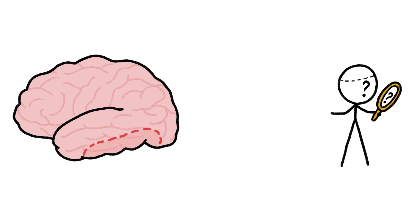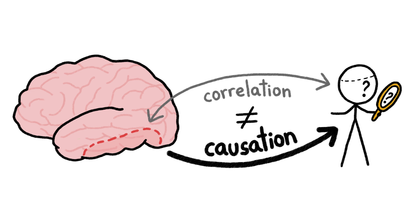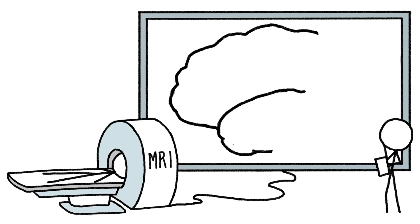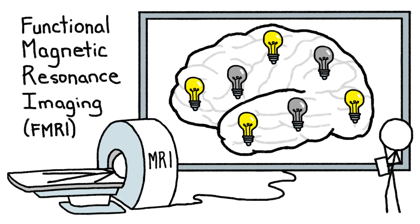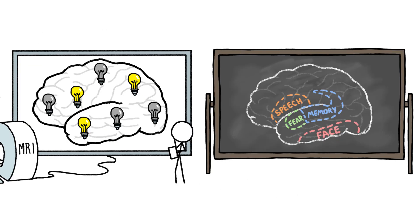However, there's a big difference between correlating a certain part of the brain with a certain mental task and proving that that part of the brain actually does that task. And sure enough, when we developed the fMRI machine in the 1990s to track moment-to-moment changes in brain activity, the old localized map of the brain quickly began to unravel.